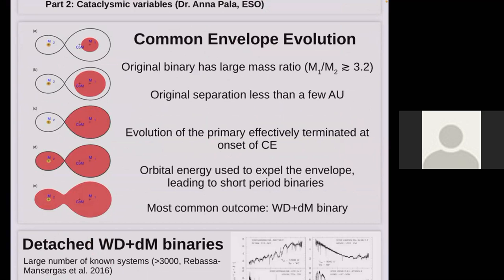What I'm going to be talking about most here is white dwarfs in close binaries with low-mass stars — M dwarfs — in which case we're talking about binaries that originally had very significant mass ratios, greater than about 3.2 — and this isn't a hard and fast number. These extreme mass ratios mean that when the primary star — the more massive one — eventually evolves off the main sequence and fills its Roche lobe as a giant, this mass transfer will always be dynamically unstable, so we're always going to get a common envelope event.